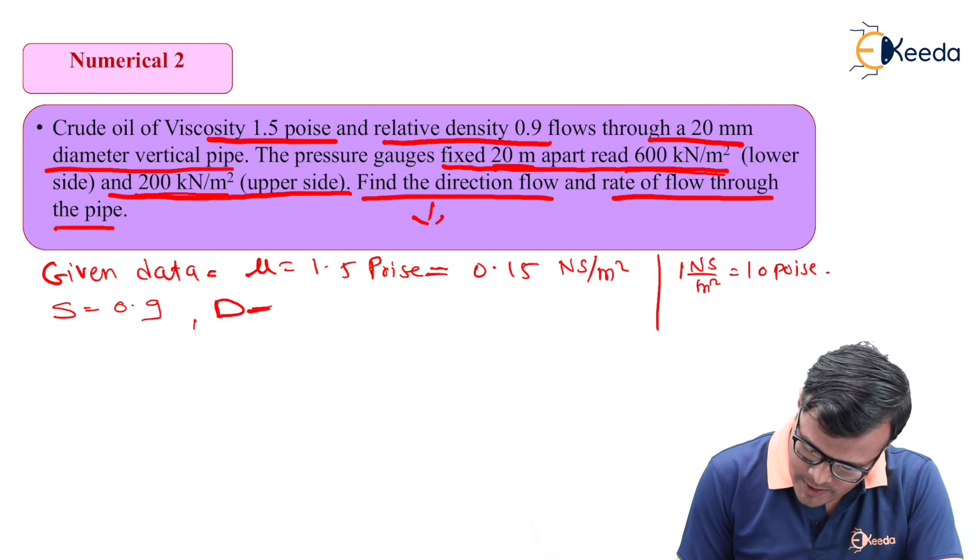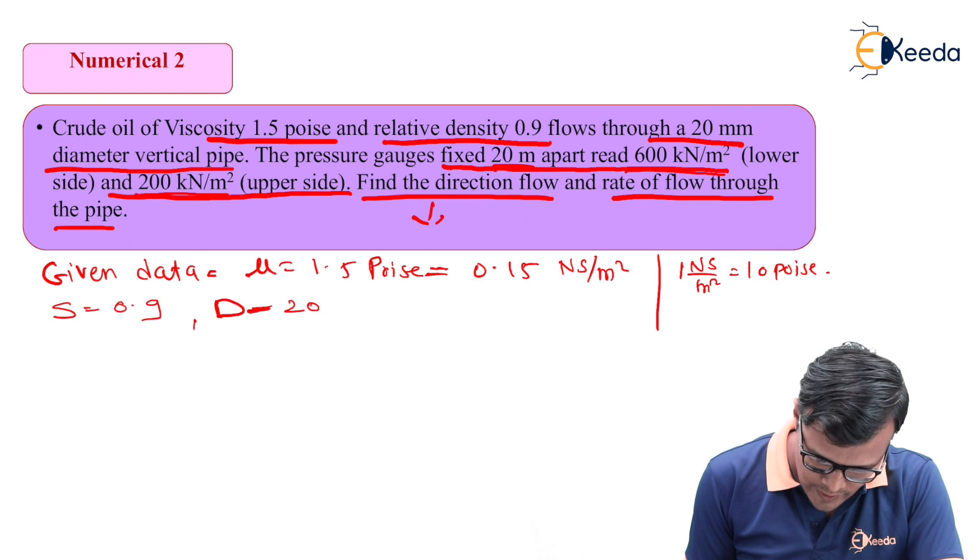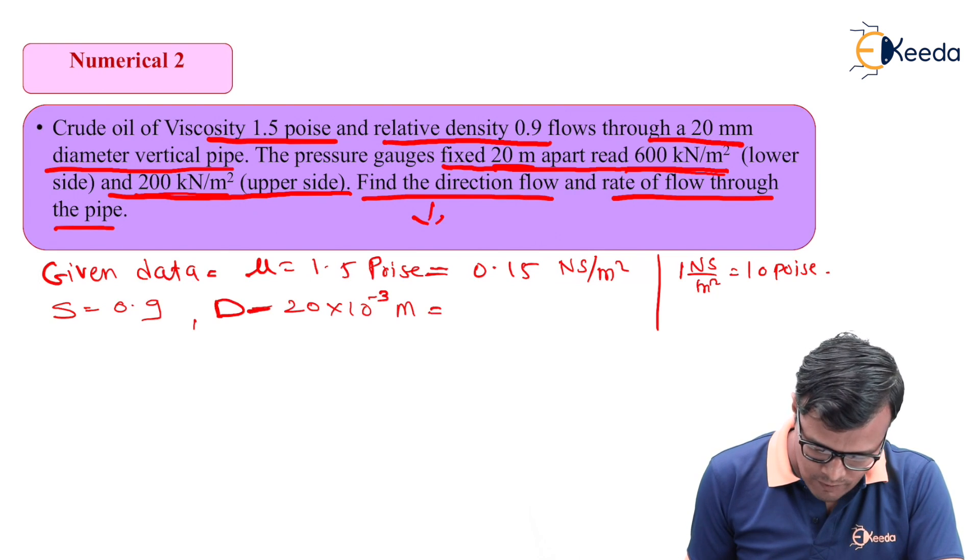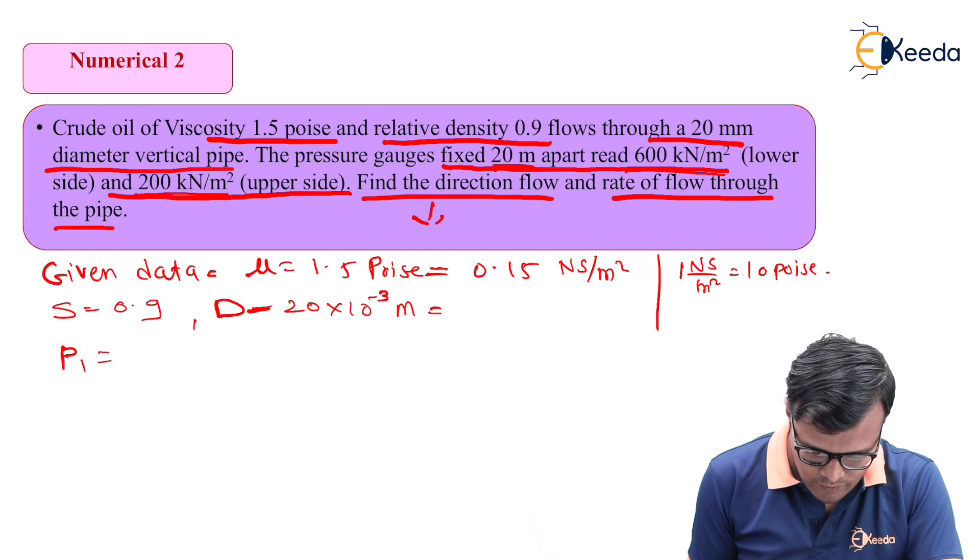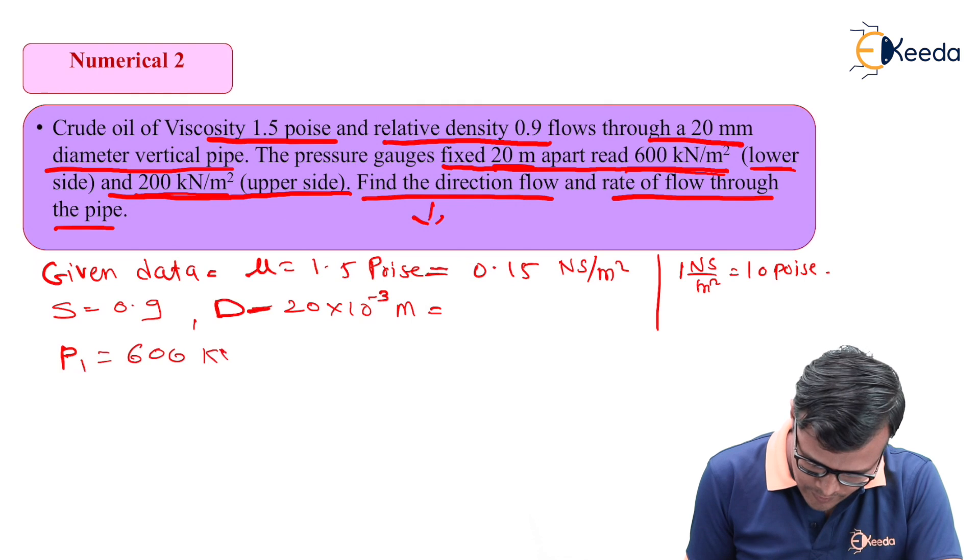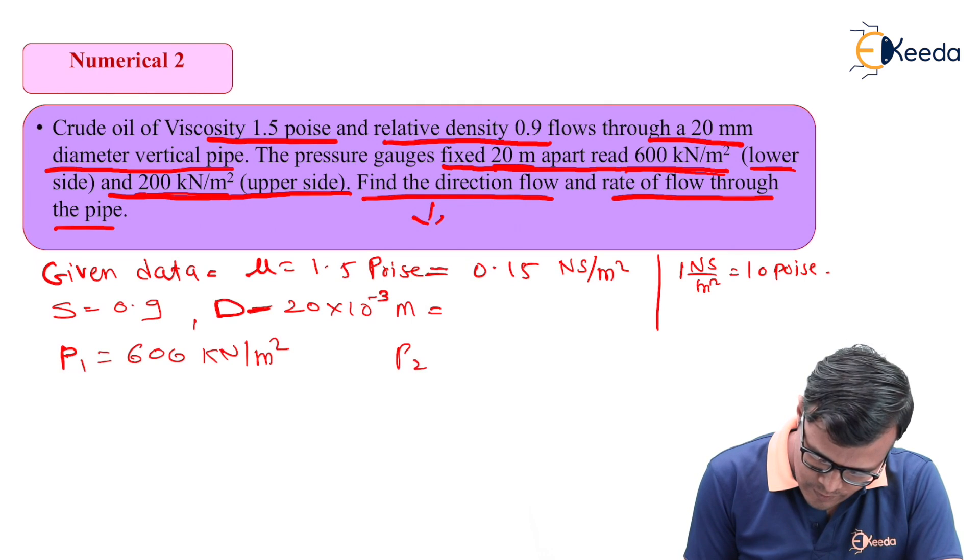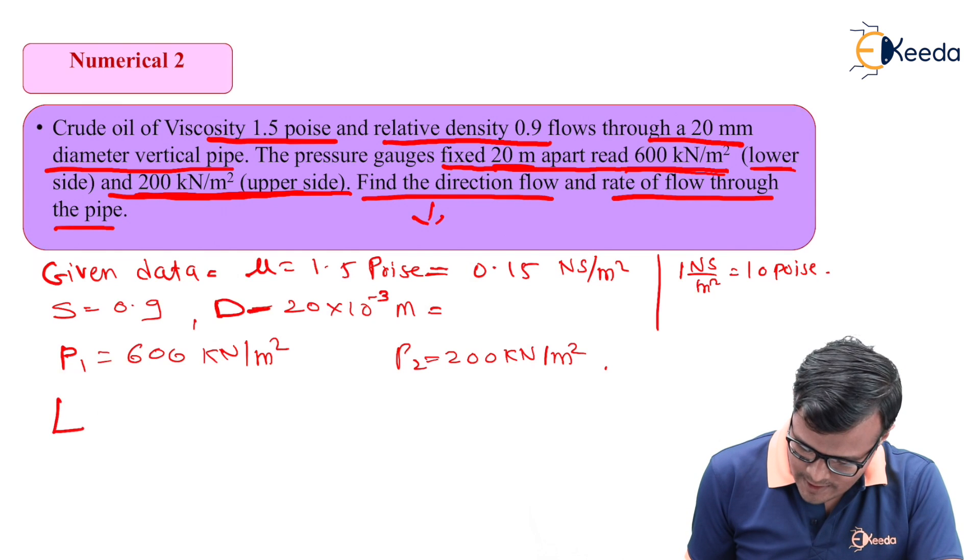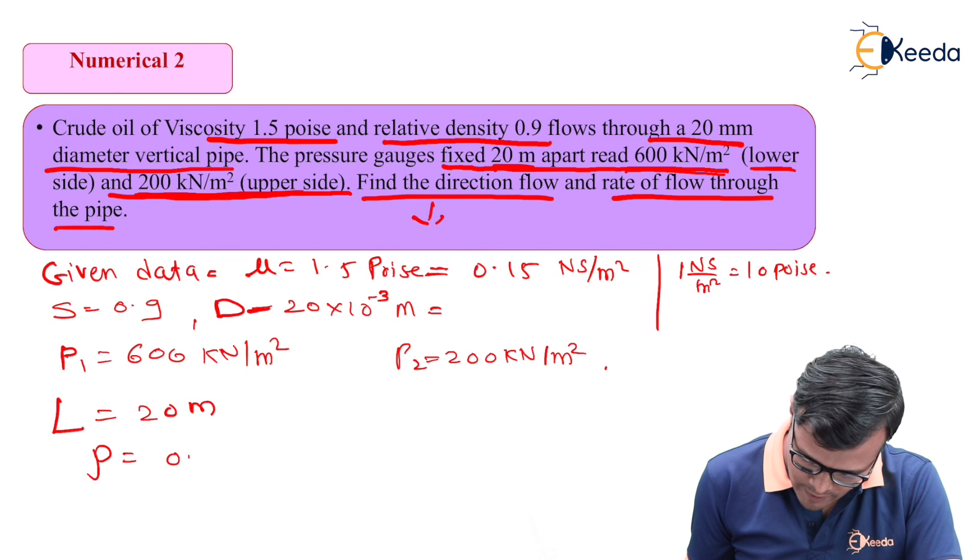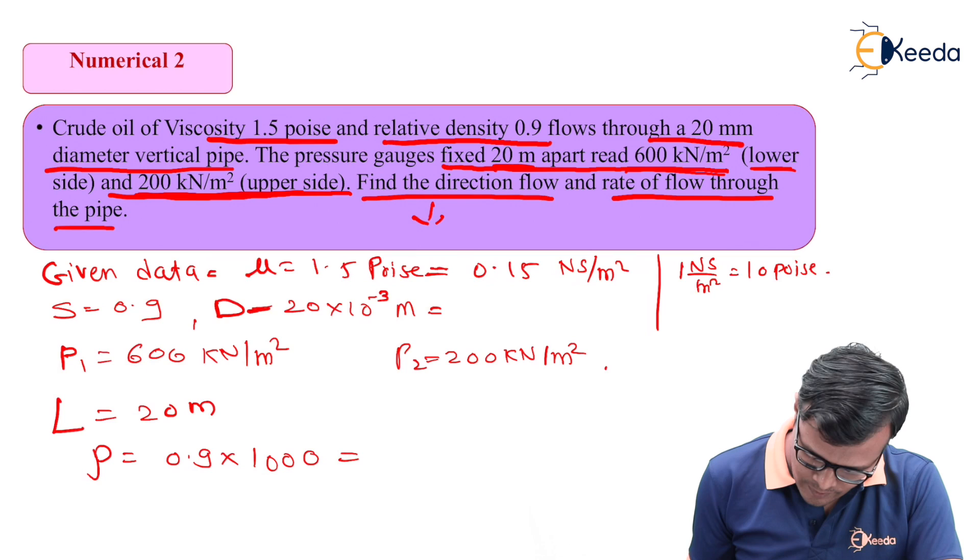Diameter D is 20 mm, or 20 × 10^-3 meters. Pressure P1 on the bottom, lower side, is 600 kN per meter square, and P2 on the upper side is 200 kN per meter square. The length between these two pressure gauges is 20 meters. We can calculate rho of oil as specific gravity 0.9 × 1000, which is 900 kg per meter cube.